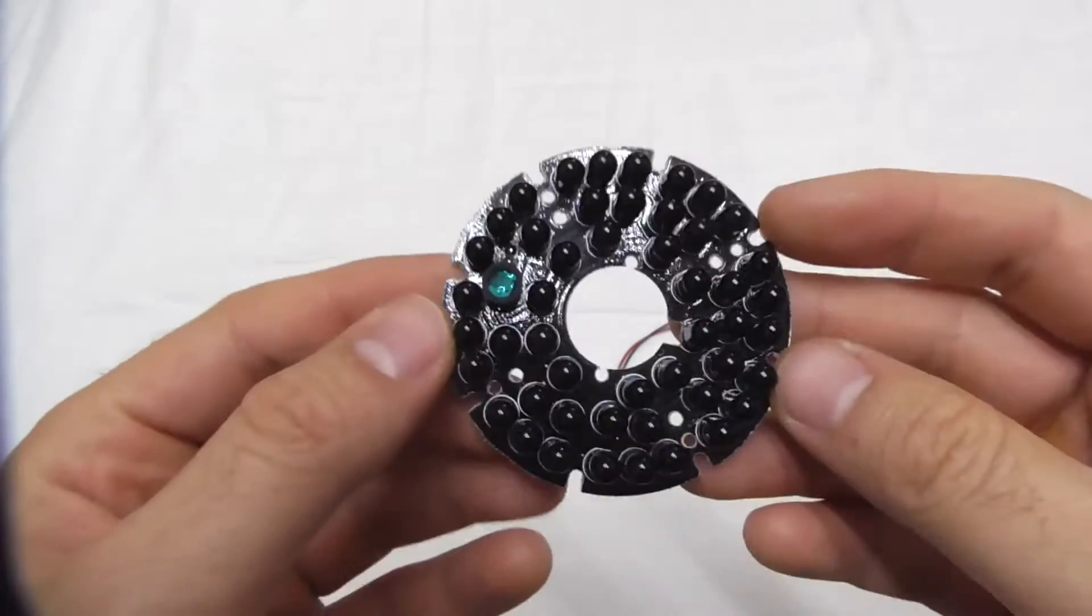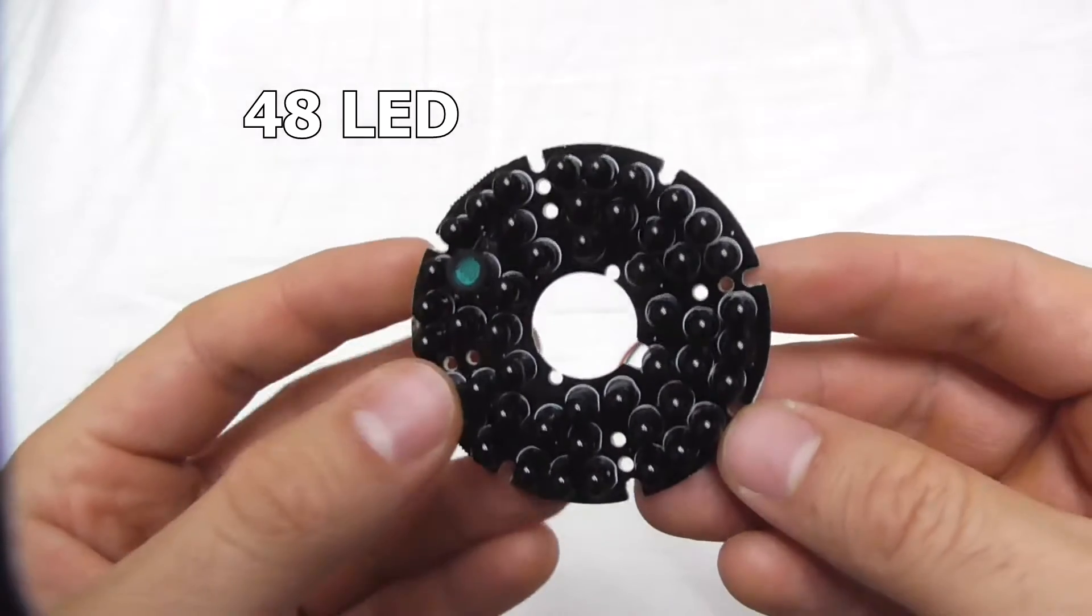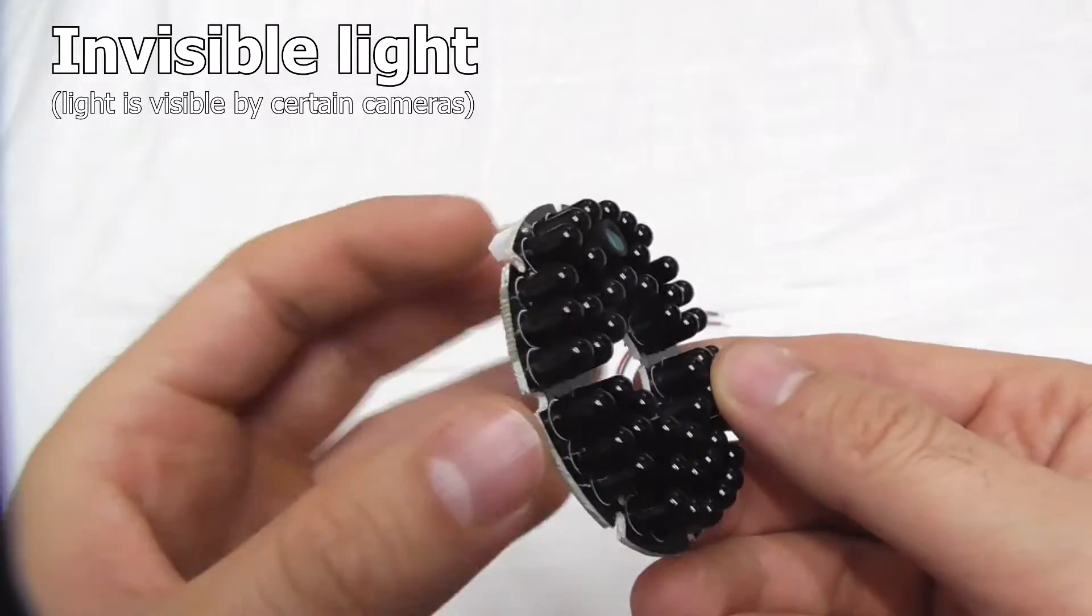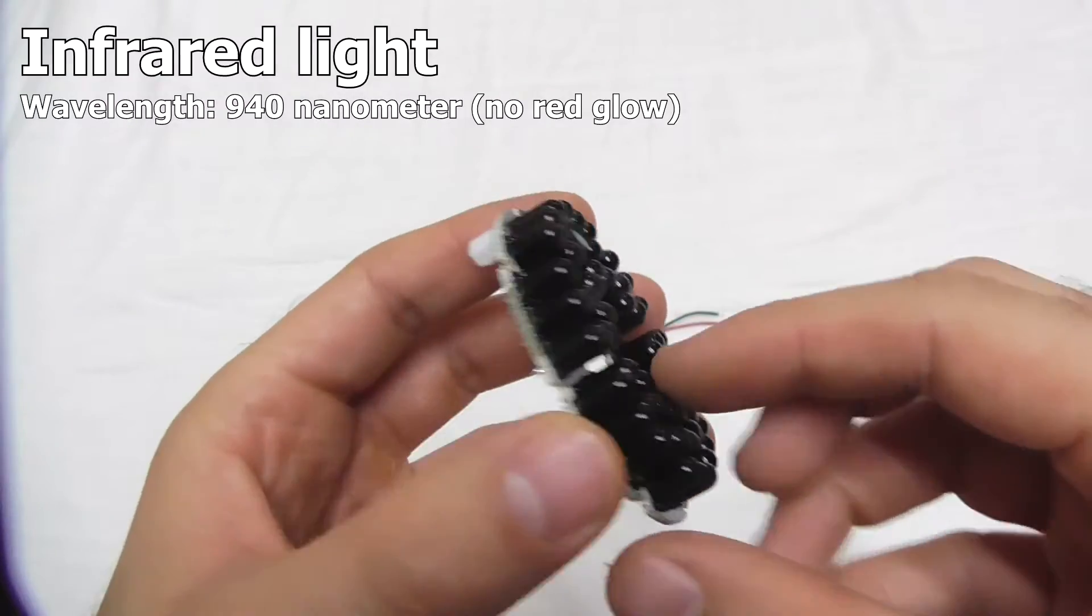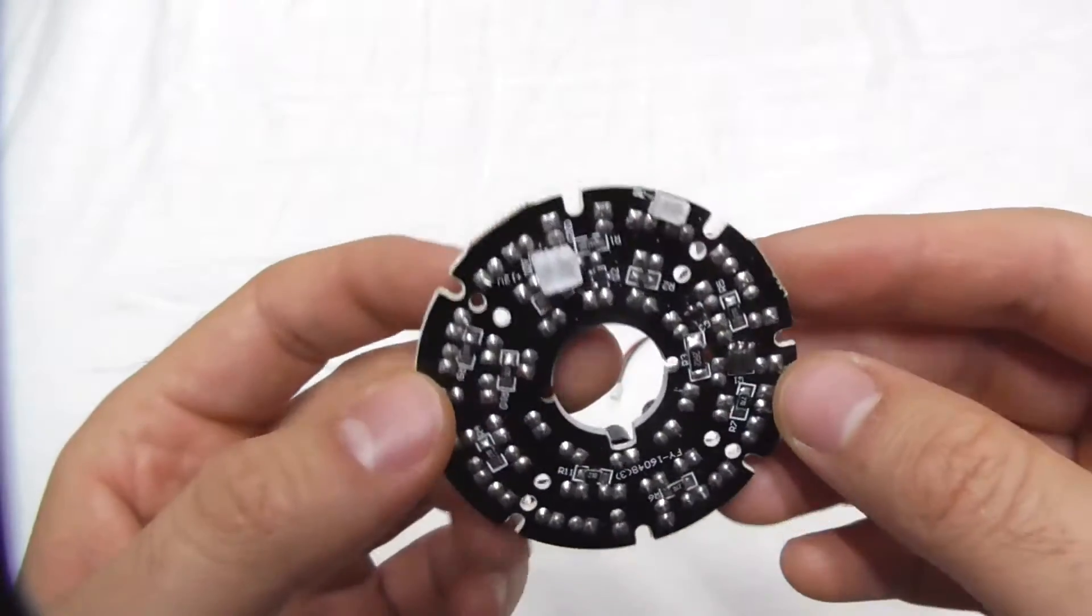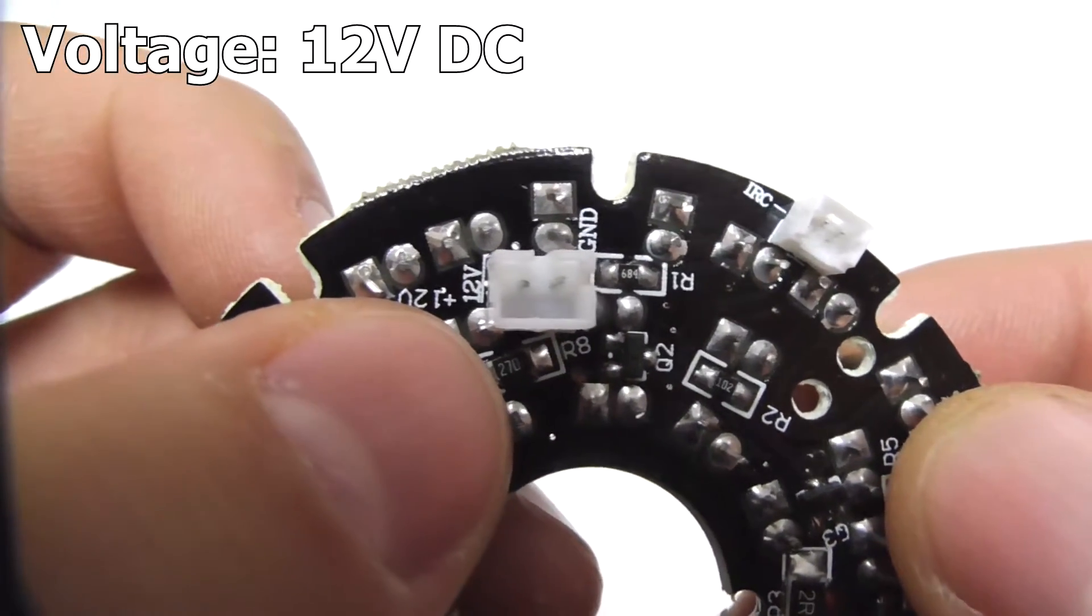Okay, so here's this illuminator. It has 48 LEDs. There are black LEDs because the light emitted by them is invisible - it's infrared at 940 nanometers. You can power it through that one, it is using 12 volts DC.